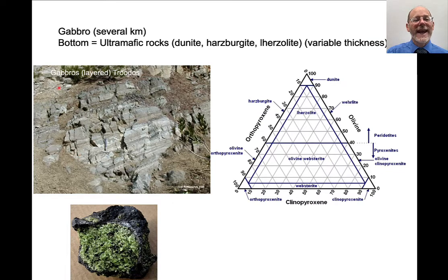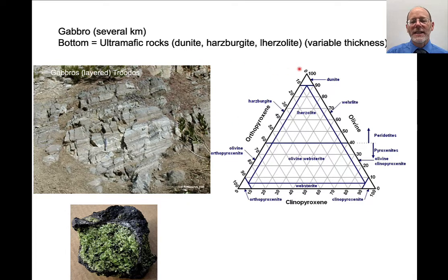Below those are gabbros — there can be several kilometers of gabbros. And at the bottom are ultramafic rocks. These can be dunites, harzburgites, or lherzolites. Dunite is just a very olivine-rich rock. Harzburgites are olivine-orthopyroxene rocks. And lherzolites are intermediate — olivine, orthopyroxene, and clinopyroxene.